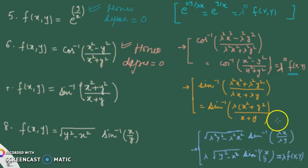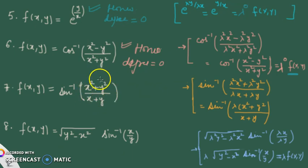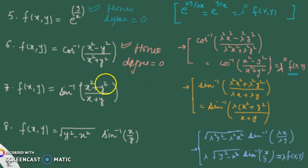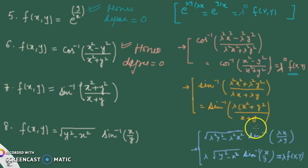The seventh example uses sin⁻¹. Again it is a rational expression, but there is a visible problem: the numerator x²+y² has degree 2, while the denominator x+1 has degree 1. Substituting lambda, you get λ² in the numerator and λ in the denominator; lambda remains inside the expression and there is no rule by which it can come out to write λ · sin⁻¹(something). So this is not a homogeneous function.